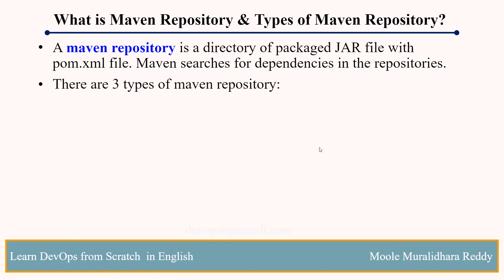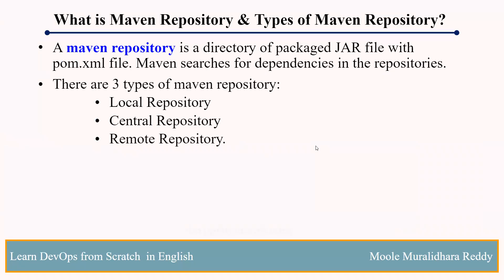We have a total of three types of repositories. One is local repository, second one is central repository, and third one is remote repository.